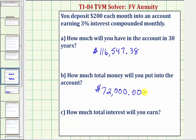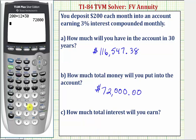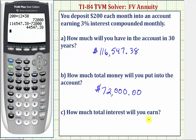Last question: how much total interest will you earn? You paid $72,000 into the account, which is now worth $116,547.38. The difference gives us the total interest earned: $116,547.38 minus $72,000, which equals $44,547.38 — the total interest earned.